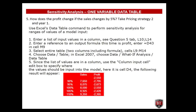Question number five: how does the profit change if sales changes by 5%? Take pricing strategy two and year one. We will perform automated sensitivity analysis using Excel's data table command. This command performs sensitivity analysis for ranges of values of a model input. The cell references in the description relate to the solution file, question four worksheet, which can be downloaded at the end of the presentation.